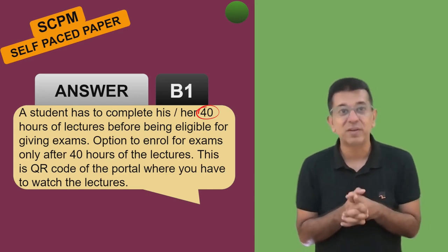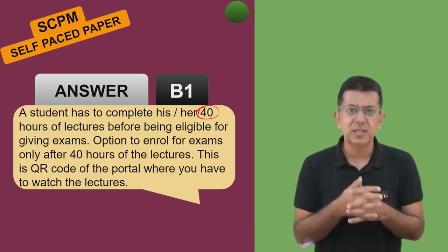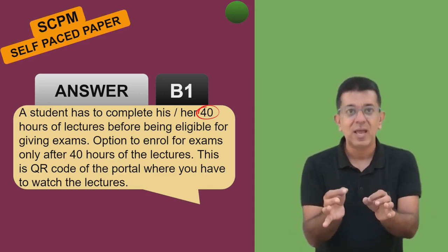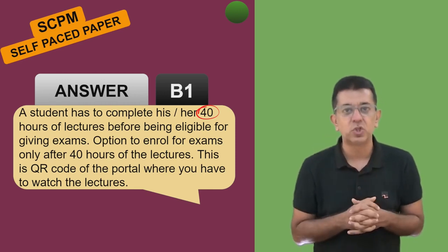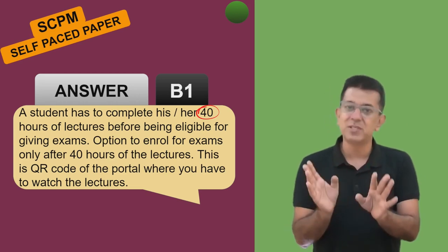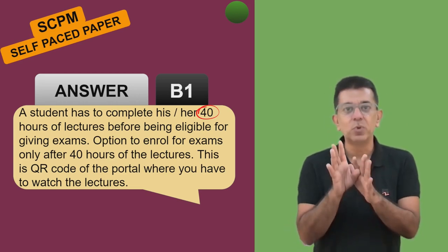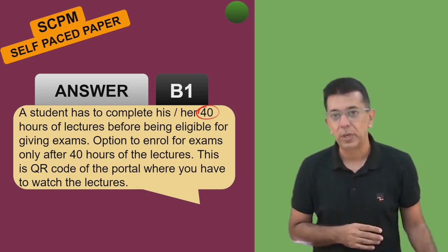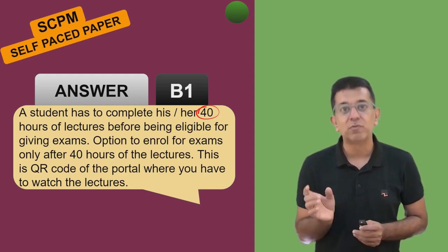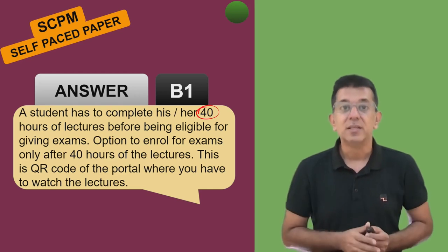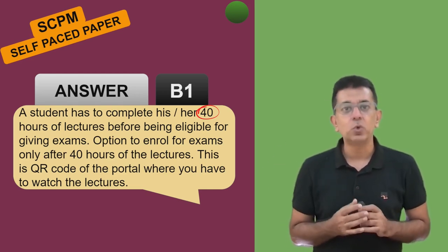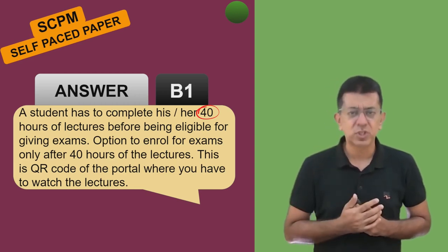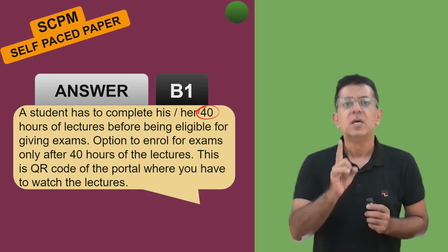If you have not completed 40 hours, you can check how many hours you have completed on the portal. Only once your 40 hours are over will an option come to give the exams. Some students found the lectures boring and didn't want to continue. In that case, simply study yourself but keep the computer screen open so the 40 hours are recorded. Once 40 hours are over, the option for giving the test will appear. You can log in through your SRO number and date of birth.